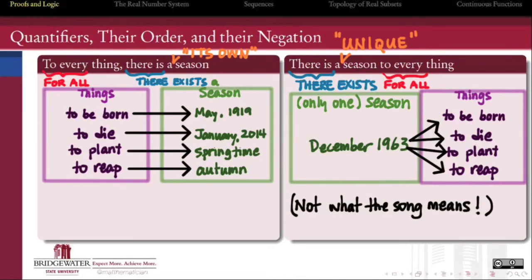Finally, remember that in a negation, quantifiers reverse their type. If we wanted to prove that the birds were lying, that to every thing there is a season is false, what evidence would we need?